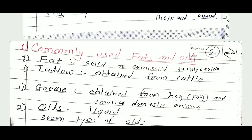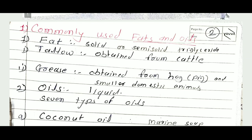Fat is the solid or semi-solid triglyceride containing a high percentage of high-melting saturated fatty acids. Fats are of two types: one is tallow and another is grease. Tallow is obtained from cattle. It is a mixture of glycerides of olein 40% and stearin 60%. Soap obtained from tallow is hard and insoluble. To soften it, tallow is mixed with coconut oil. For preparation of marine soap, tallow is mainly used.